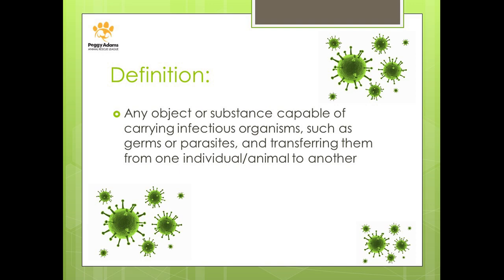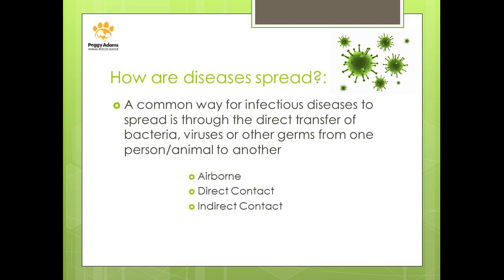So how are diseases spread? A common way for infectious diseases to spread is through direct transfer of bacteria, viruses, or other germs from one person or animal to another. We can identify these modes of transmission as airborne, direct contact, and indirect contact.